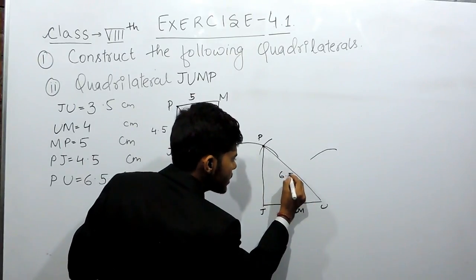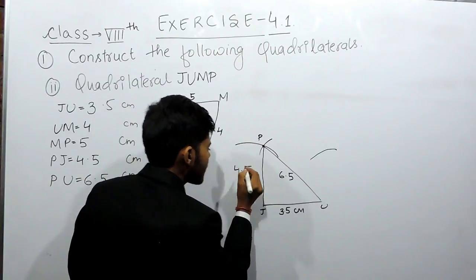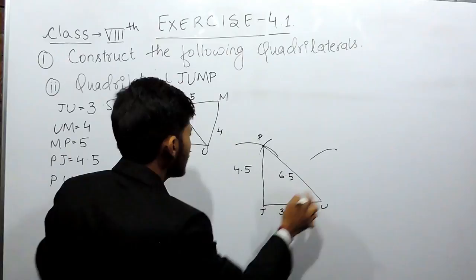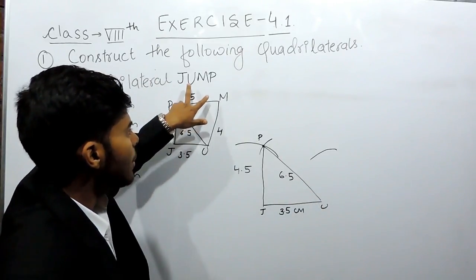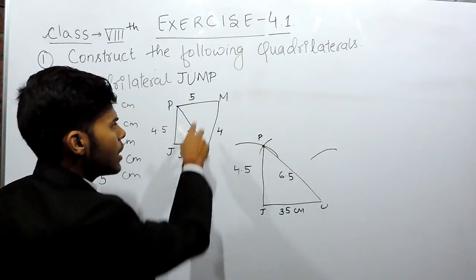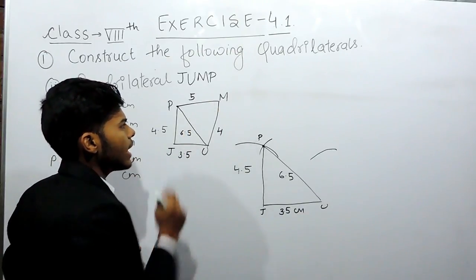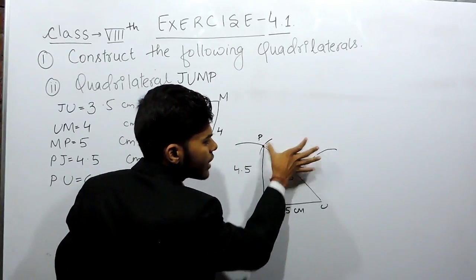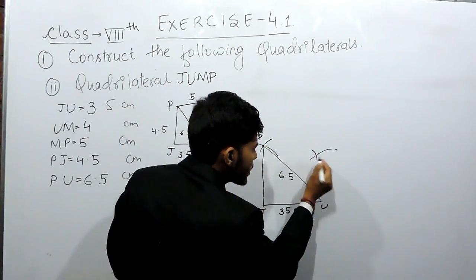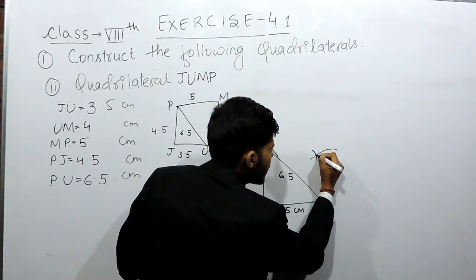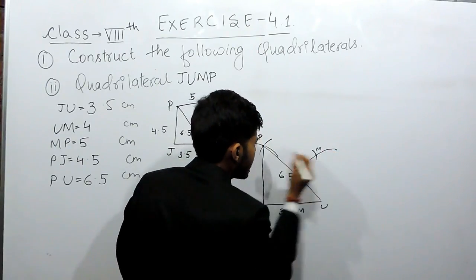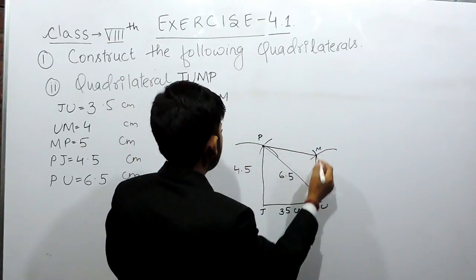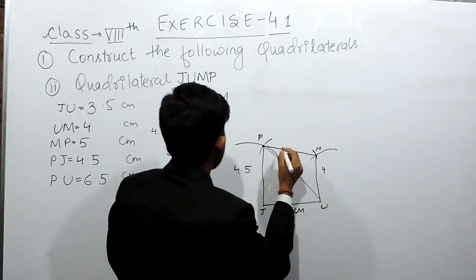You already have an arc from point U. Now from point P, make an arc of 5 centimeters, because the two arcs from U and P intersect at point M. Keep the compass at point P and cut an arc of 5 centimeters. This intersection point is point M. Joining gives us MU of 4 centimeters and PM of 5 centimeters.